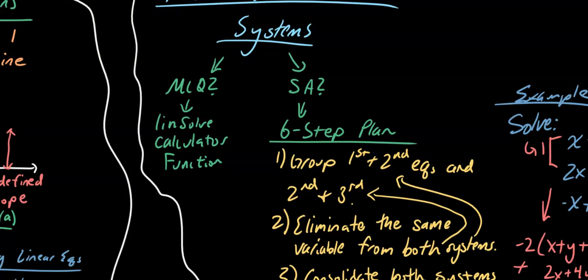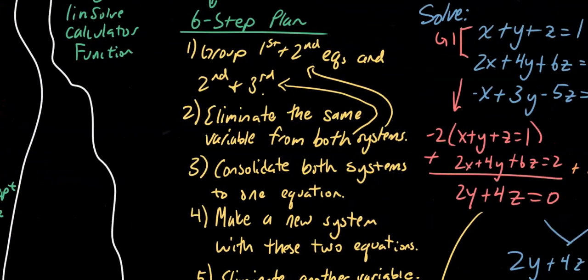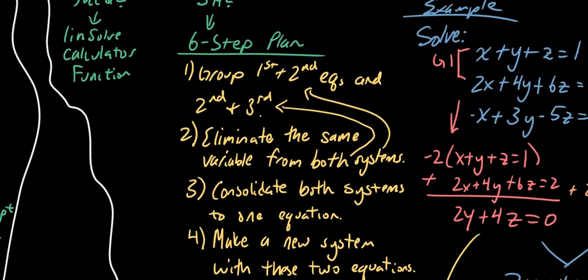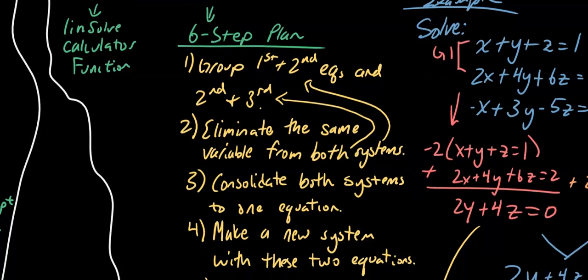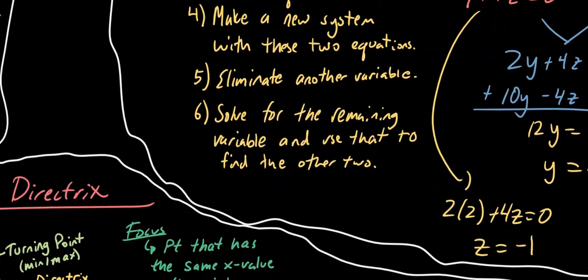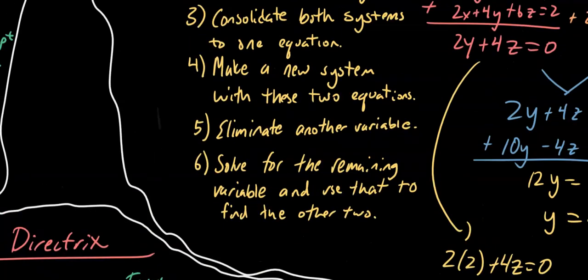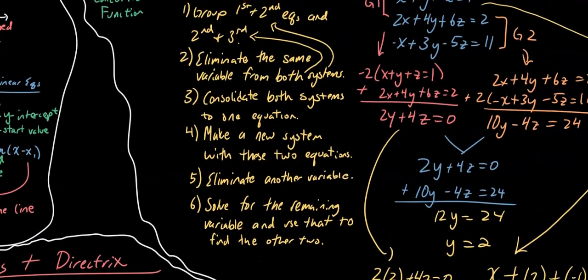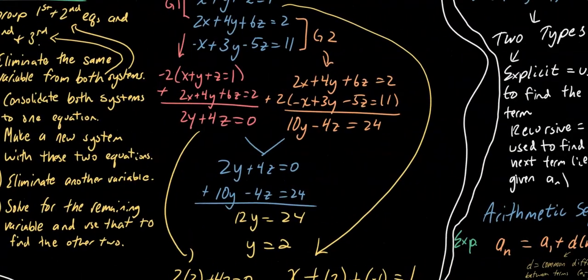On short-answer questions you'll be required to show your work, so a calculator hack won't help you. Here's a six-step plan: group your first and second equations, and also your second and third equations. Then eliminate the same variable from both groups, consolidate each to one equation, use those new equations to make a new system, eliminate another variable, solve for it, and then go back and find the other two.